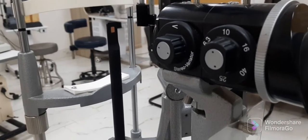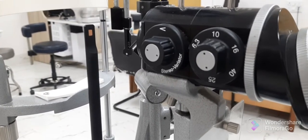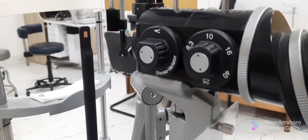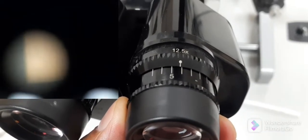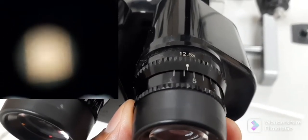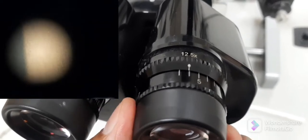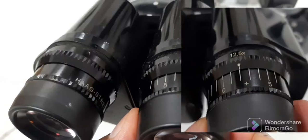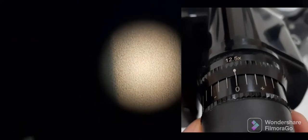Now when we switch on the slit lamp we can clearly see the target that we have to focus through the eyepieces individually. Now we can see both eyepiece and the target in the video. Let's suppose that our examiner is emmetropic, so when we rotate the eyepiece dial towards the zero, as you can see the target is very crisp and clear - this is the final point of focus.